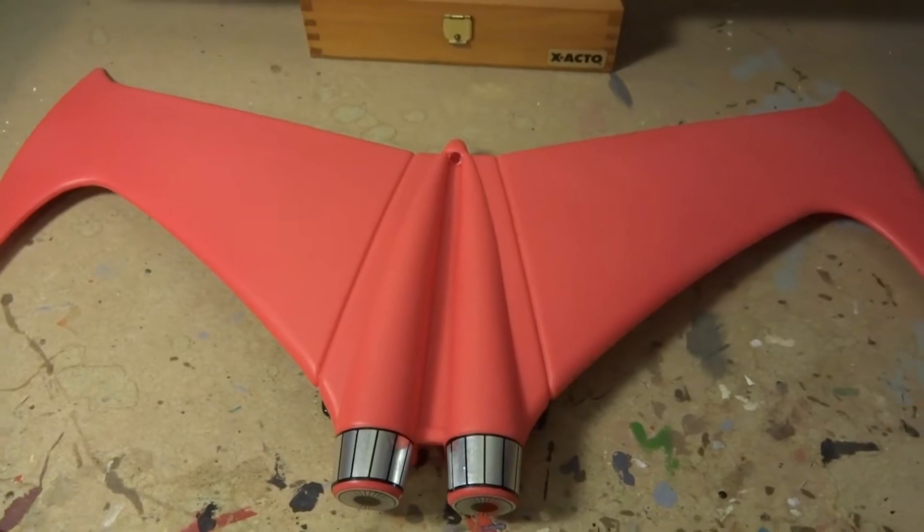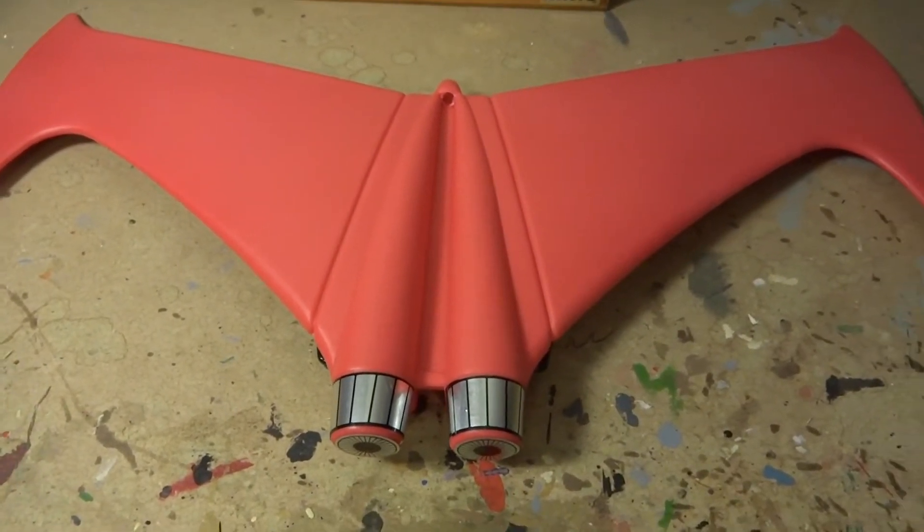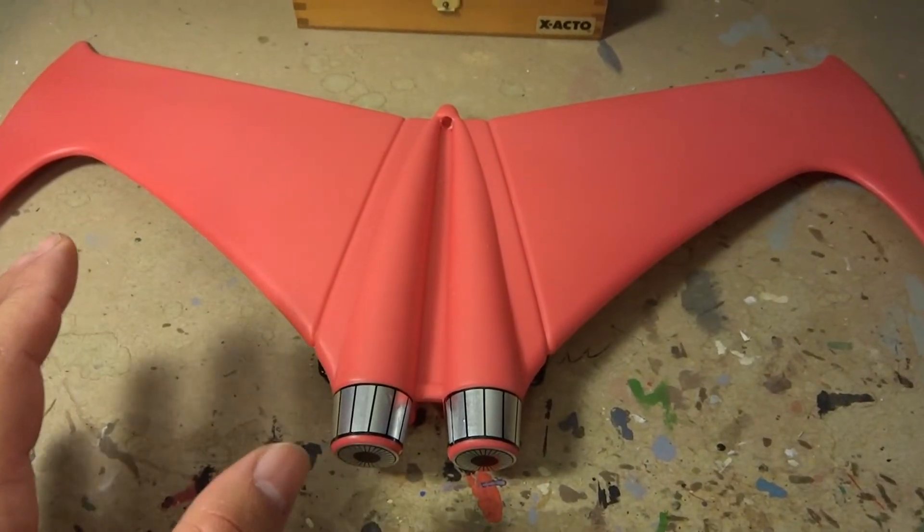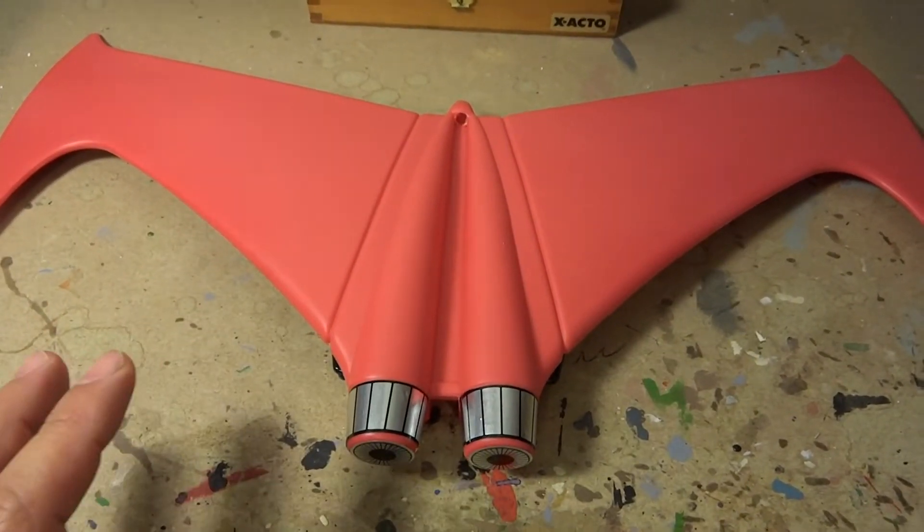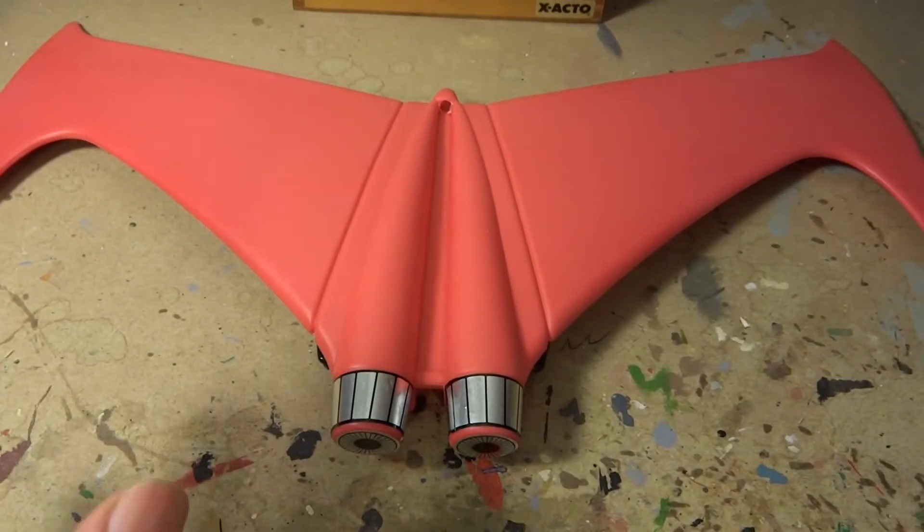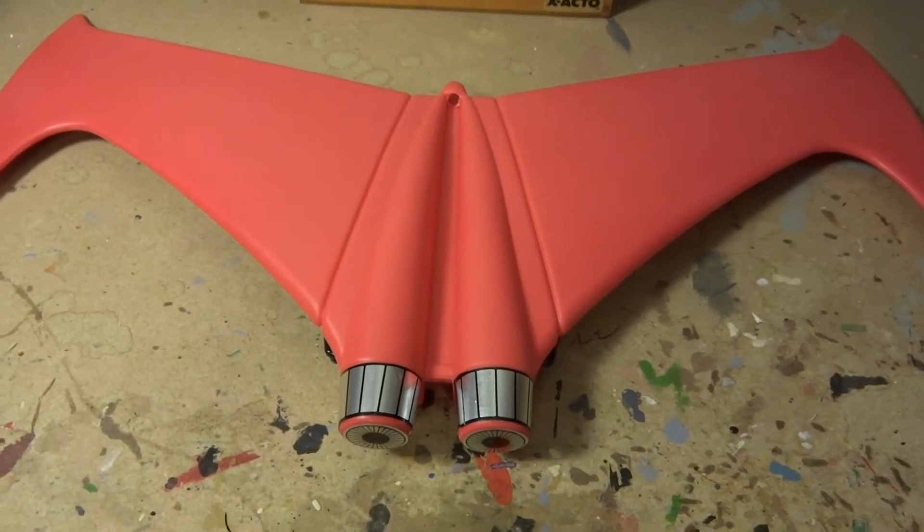This Shogun Warrior item is specific to one Shogun Warrior and that is Mazinga. These wings clip onto the back of him and they really just completely change the whole dynamic of your Mazinga figure, your Shogun Warrior.